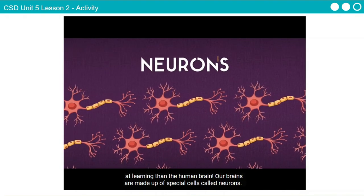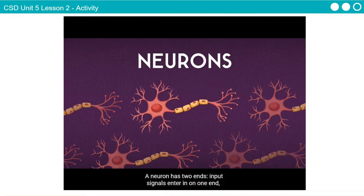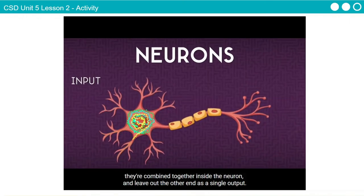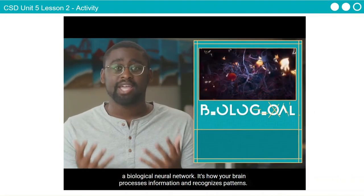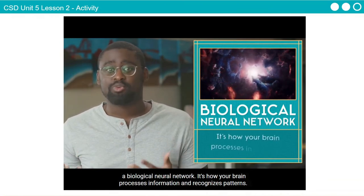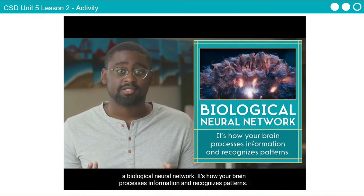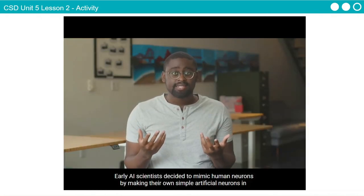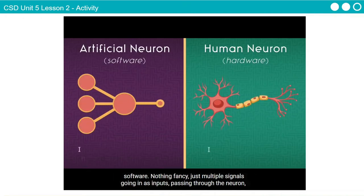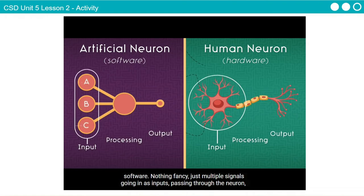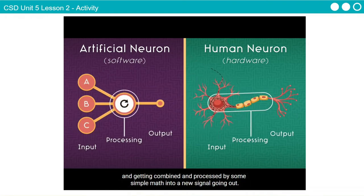Our brains are made up of special cells called neurons. A neuron has two ends — input signals enter on one end, they're combined together inside the neuron, and leave the other end as a single output. All of the billions of neurons in your brain are connected to each other in what's called a biological neural network. Early AI scientists decided to mimic human neurons by making their own simple artificial neurons in software — just multiple signals going in as inputs, passing through the neuron, and getting combined and processed by some simple math into a new signal going out.